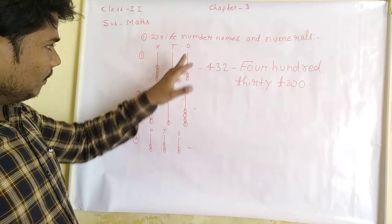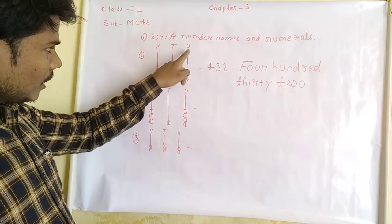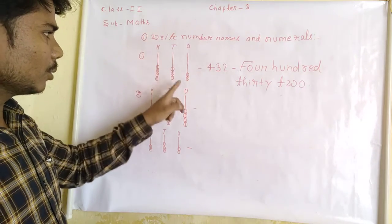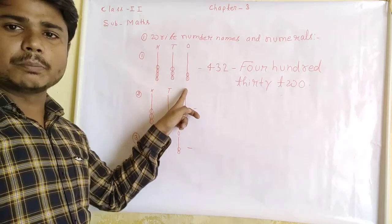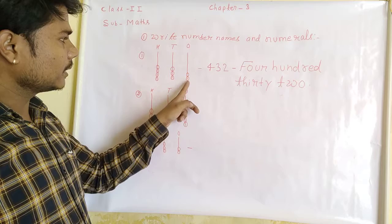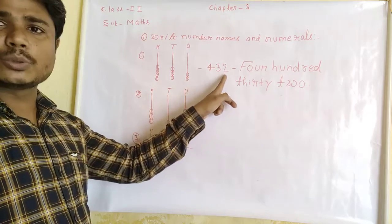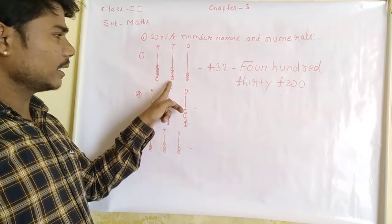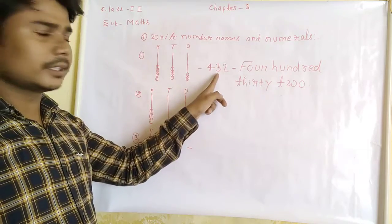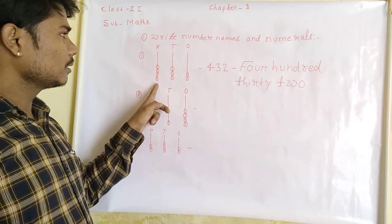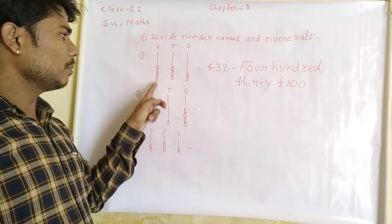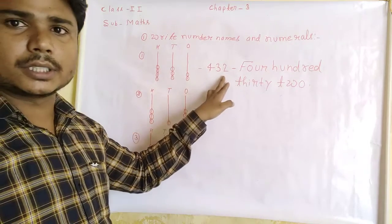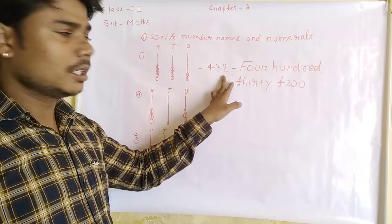This is ones, this is tens, this is hundreds — these are also called bits. How many bits in the ones place? 2. How many bits in the tens place? 3. And the number of bits in the hundreds place is 4. So this is 432. This is called numerals.